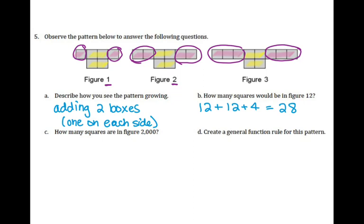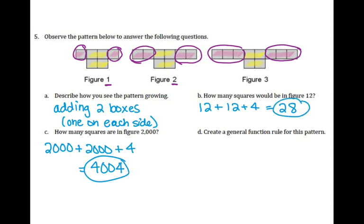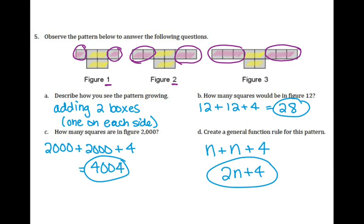How many squares are in figure 2000? You'll have 2000 on the left, 2000 on the right, plus 4 in the middle — that gives 4,004. For the general rule, using N for the figure number: N + N + 4. Combining like terms gives 2N + 4 as the general function rule for the pattern.